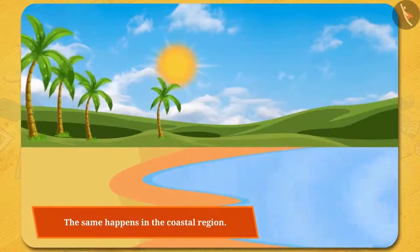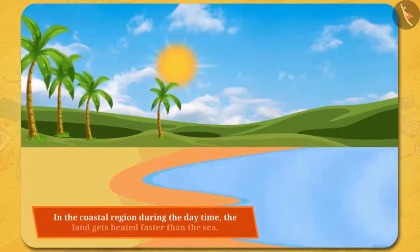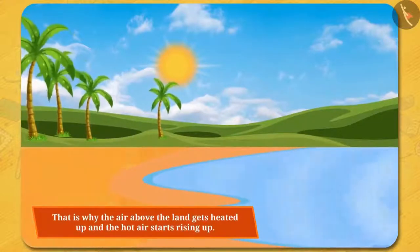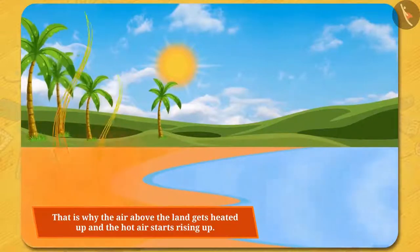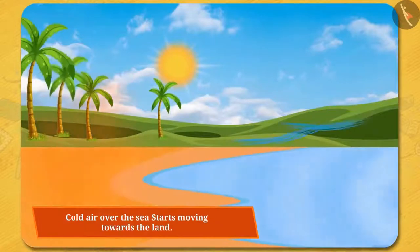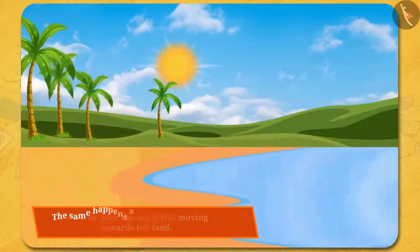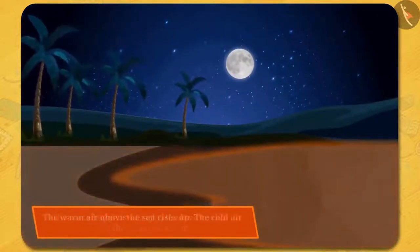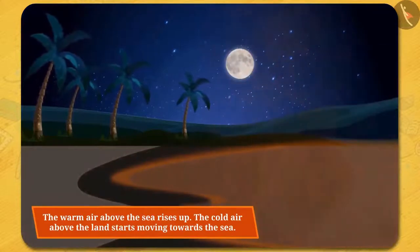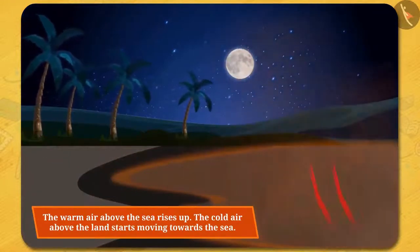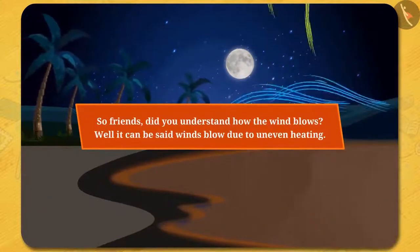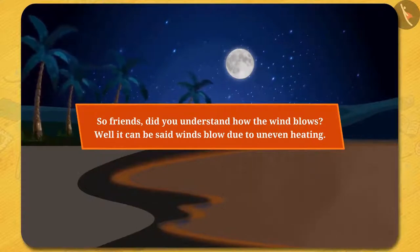The same happens in the coastal region. During the daytime, the land gets heated faster than the sea. That is why the air above the land gets heated up and the hot air starts rising up, and the cold air over the sea starts moving towards the land. The same happens at night — the land cools faster than the sea water, the warm air above the sea rises up, and the cold air above the land starts moving towards the sea. So friends, wind blows due to uneven heating.